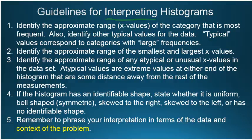Step three, identify the approximate range of any atypical or unusual x values in the data set. These are typically called outliers and are values that are separated from the rest of the group.